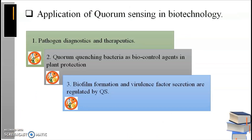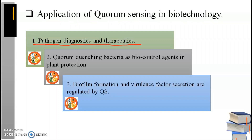Lastly, the applications. First is pathogen diagnostics and therapeutics — quorum sensing allows pathogenic bacteria to know when they have amassed enough cells to mount a successful attack to infect a plant or animal, including humans. Second is quorum quenching, where specific inhibitors disrupt the quorum sensing process; this term is specifically used in plant protection, which I will explain in my next video. Third is biofilm formation and virulence factor secretion, which I have already explained.